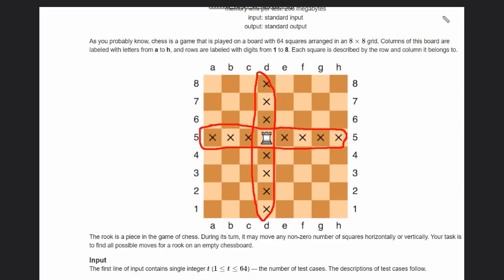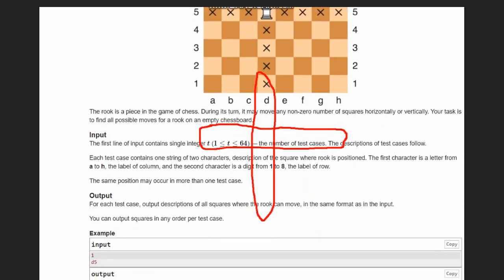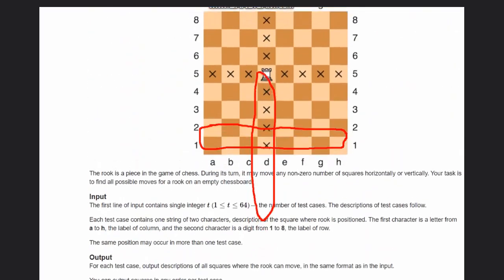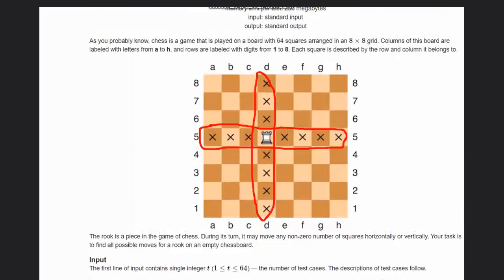For the first test case we have d5, which is the same case as shown above. In case of d5, the rook moves to d1, d2, d3, d4, d6, d7, d8, and then a5, b5, c5, e5, f5, g5, and h5. These are the possible moves.